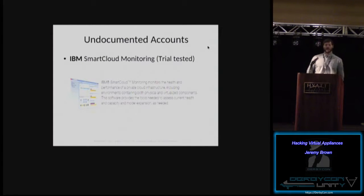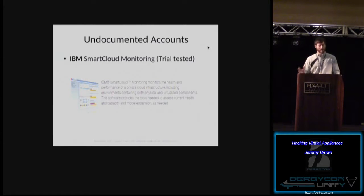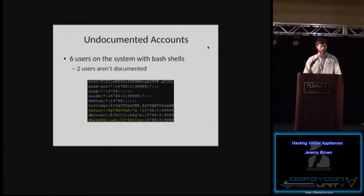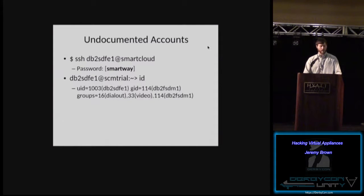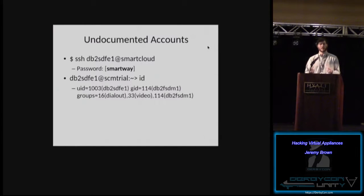IBM SmartCloud Monitoring — I only tested the trial, so I want to call that out. There are six users on the system that have bash shells, two of which aren't documented. Users like DAS user1, DB2, and others. In the documentation, they document a couple of users with the password 'SmartWay,' but don't talk about these undocumented two at all. These two use the documented password but aren't mentioned themselves. So there's a remote shell on the SmartCloud trial, at least.